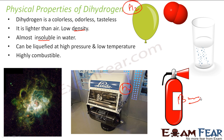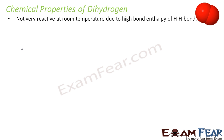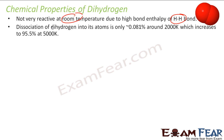It can be liquefied and it is highly combustible — it burns. These are the physical properties of dihydrogen. Now let's talk about the chemical properties of dihydrogen. It is not very reactive at room temperature because of the H–H bond, so it is pretty stable at room temperature.